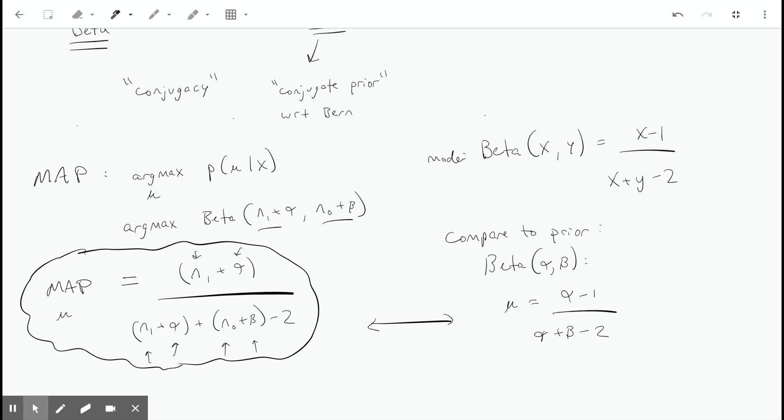You see these alphas and betas popping up, and that's why the MAP is a combination of the likelihood and the prior versus the maximum likelihood estimate, which would just look at this likelihood term and try to maximize the probability of the data given the parameters. So again, to reiterate, in the Bayesian approach we get the advantage of having this prior.